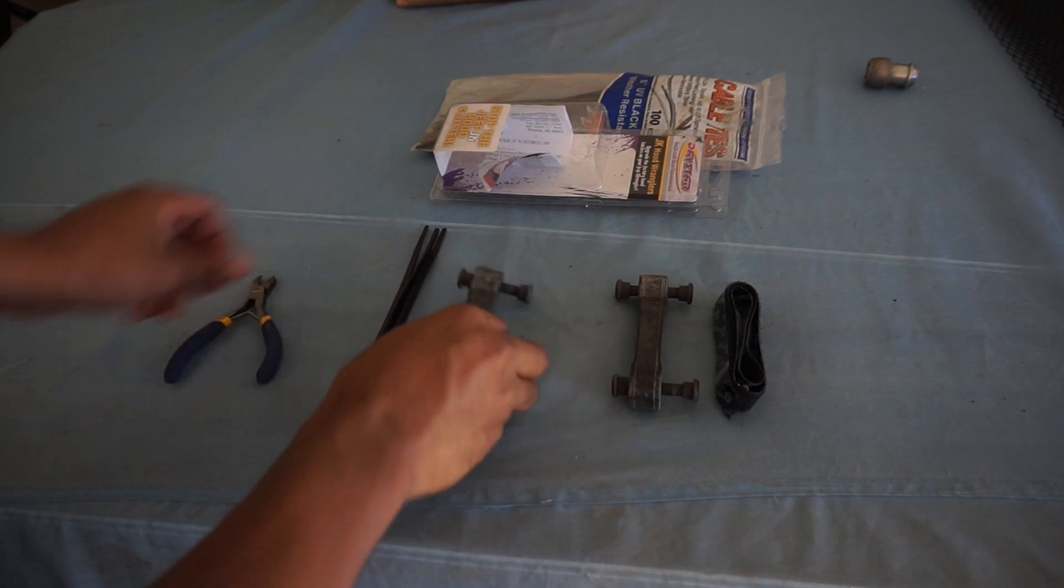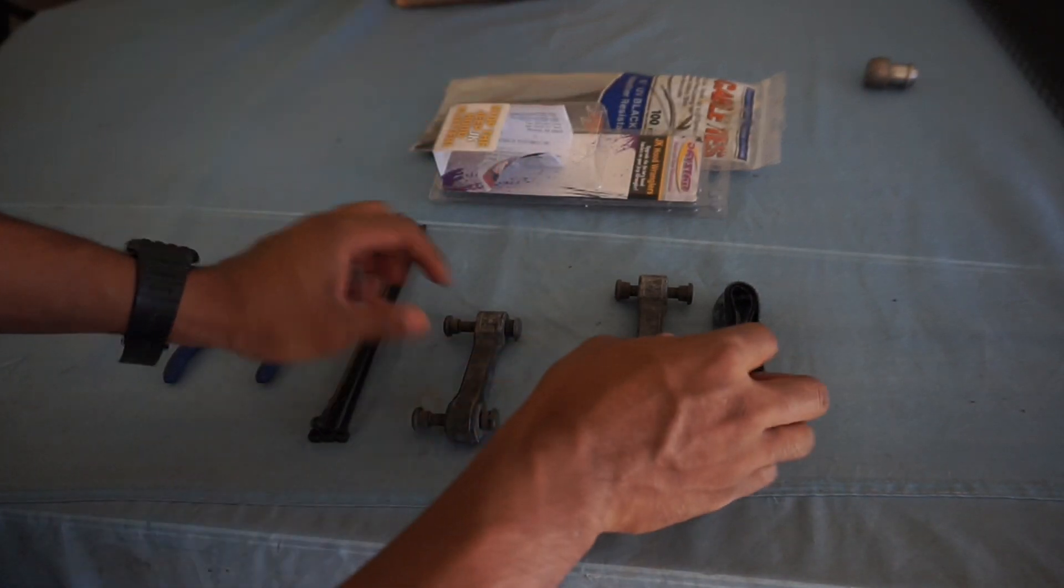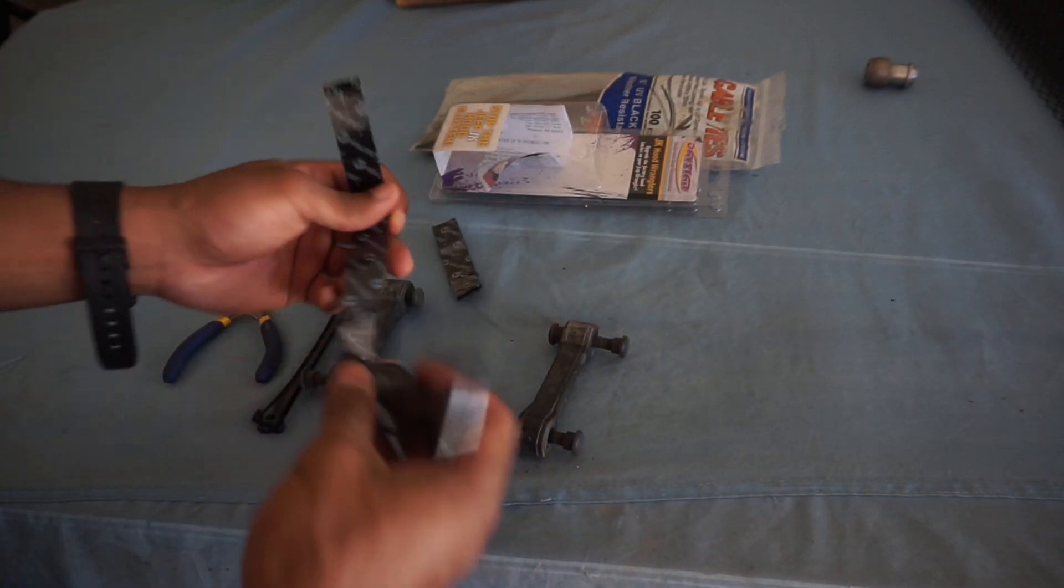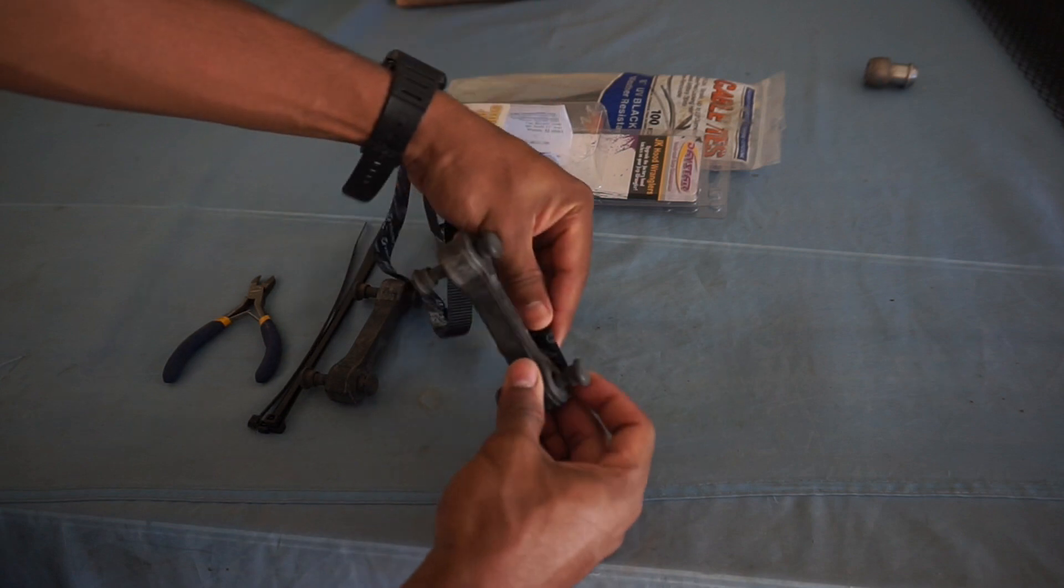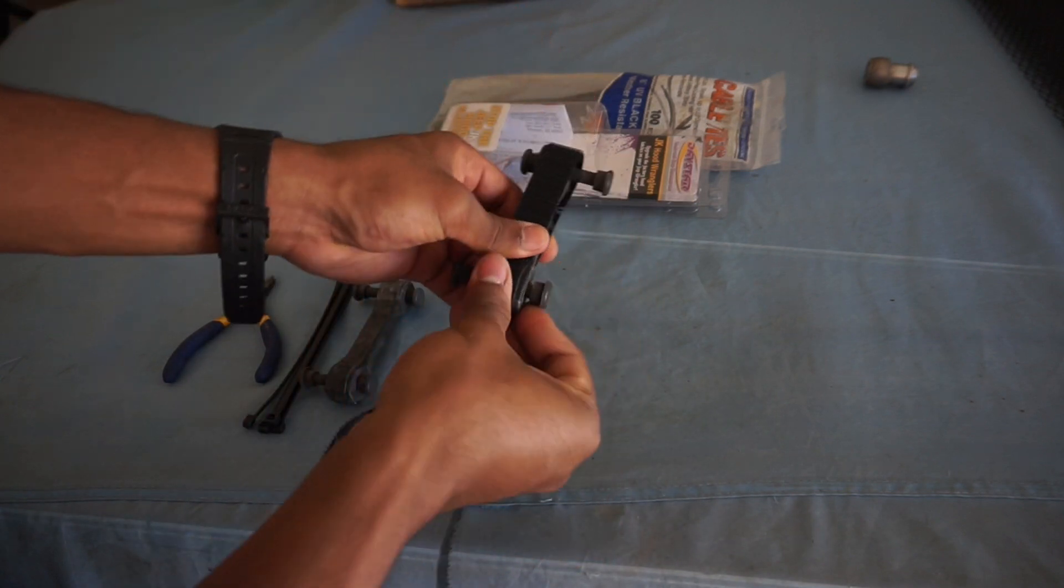So the first method to stop hood flutter is the velcro method. I'm gonna go over here get some velcro. You can get this from any store like Walmart or something like that. But basically the theory is you get your hood latch and you wrap it in your velcro.